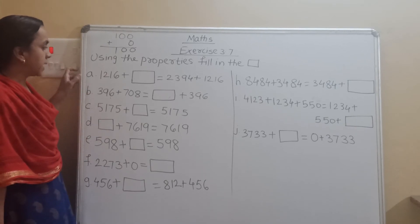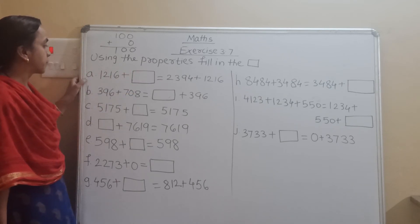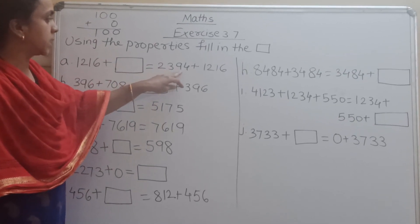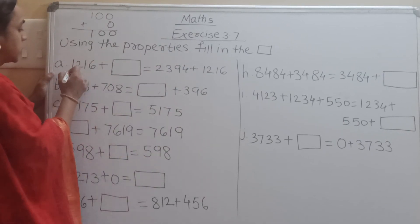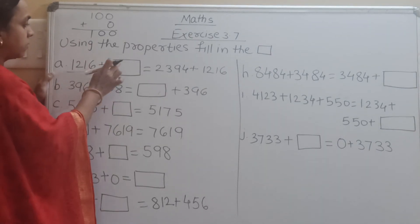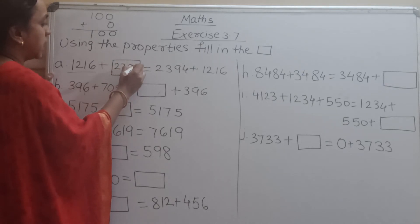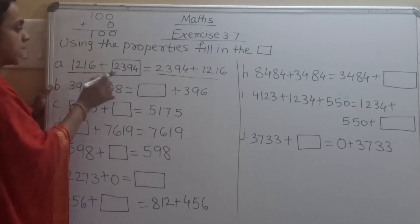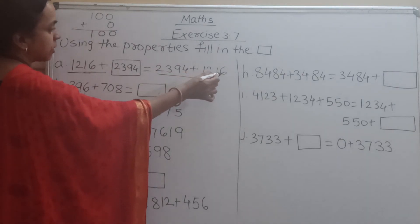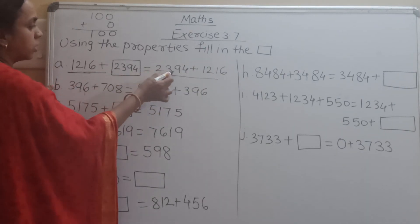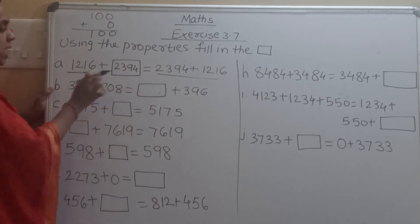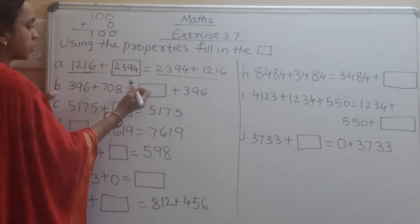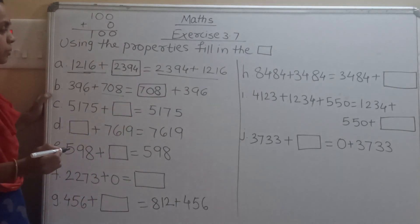Here we have to write down the missing numbers. The first example is: 1216 plus blank equals 2394 plus 1216. The number 1216 is on both sides. So the missing number is 2394 — both sides must be equal. The second example: 396 plus 708 equals blank plus 396. The missing number here is 708.